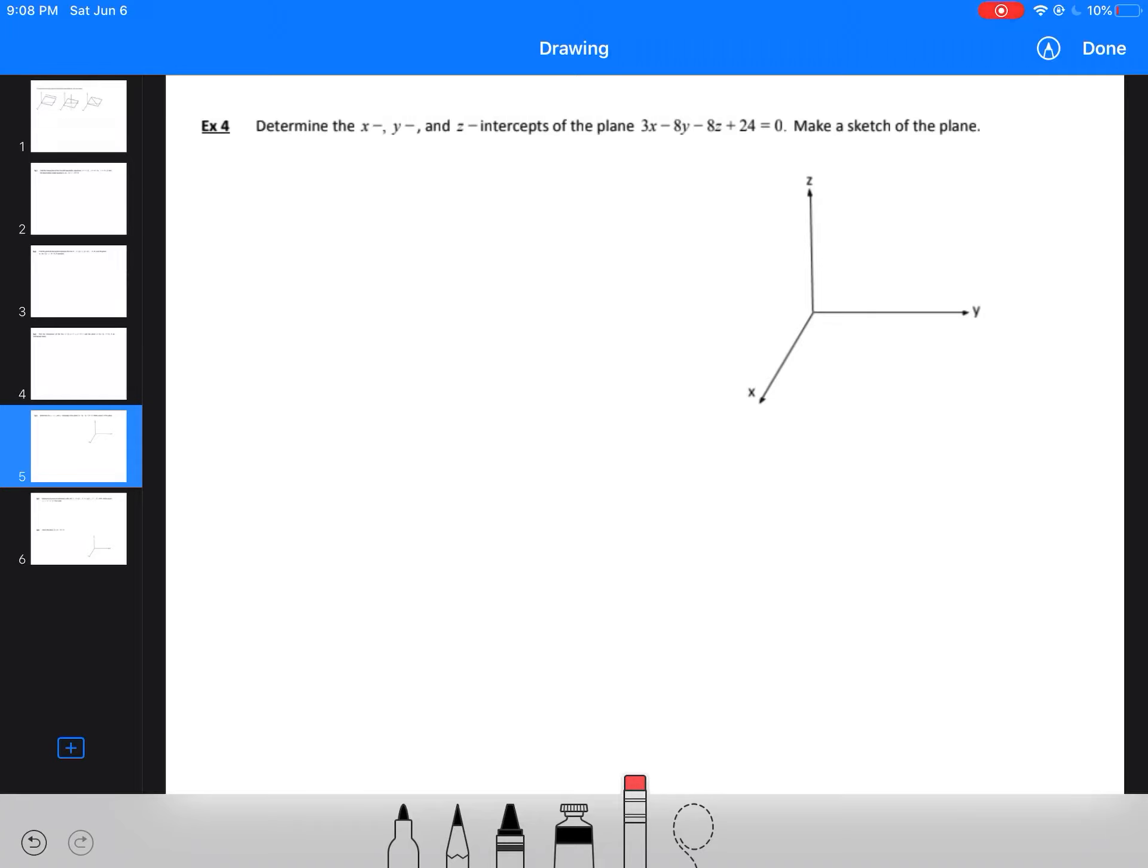This video continues discussing relationships between lines and planes. Example 4 will show how to make a sketch of a plane. We're going to find the x, y, and z intercepts and then make a sketch.